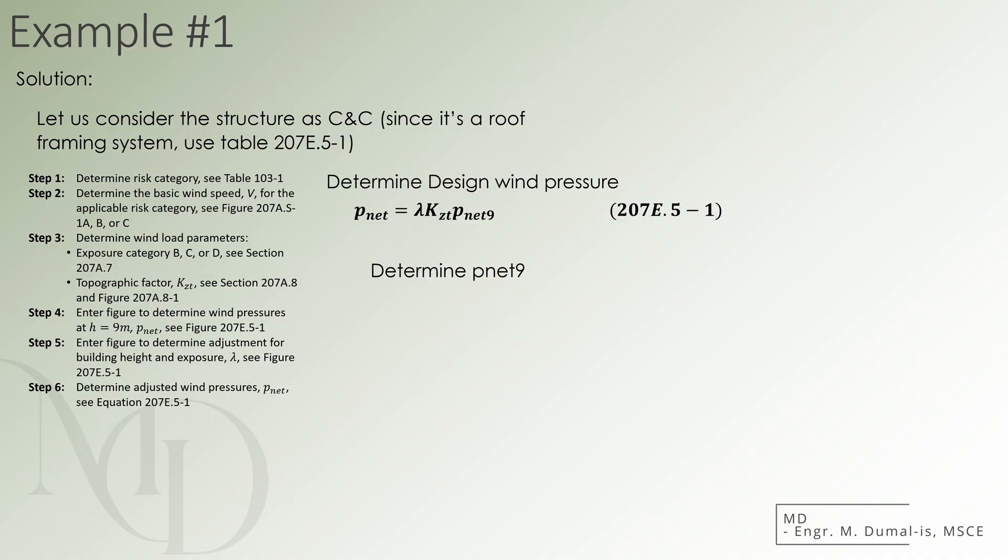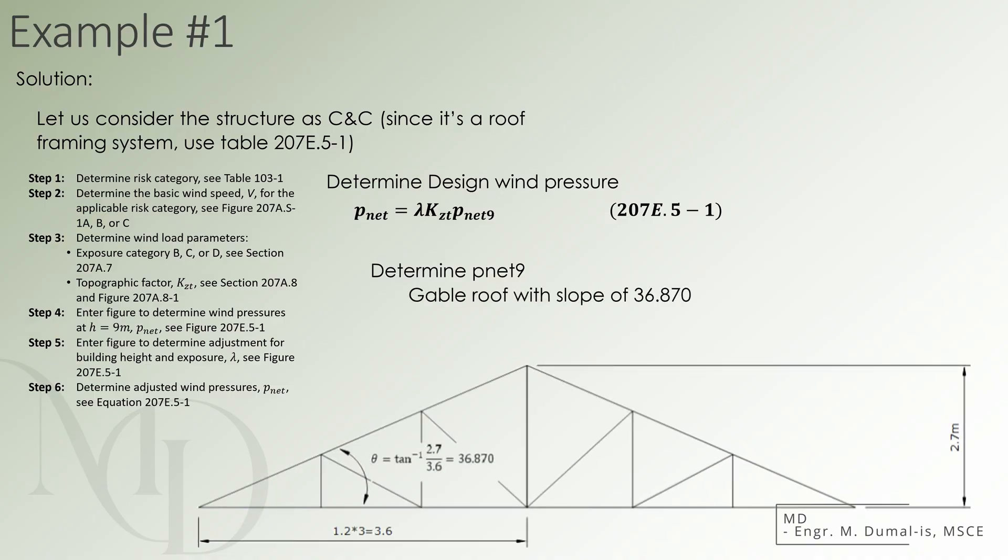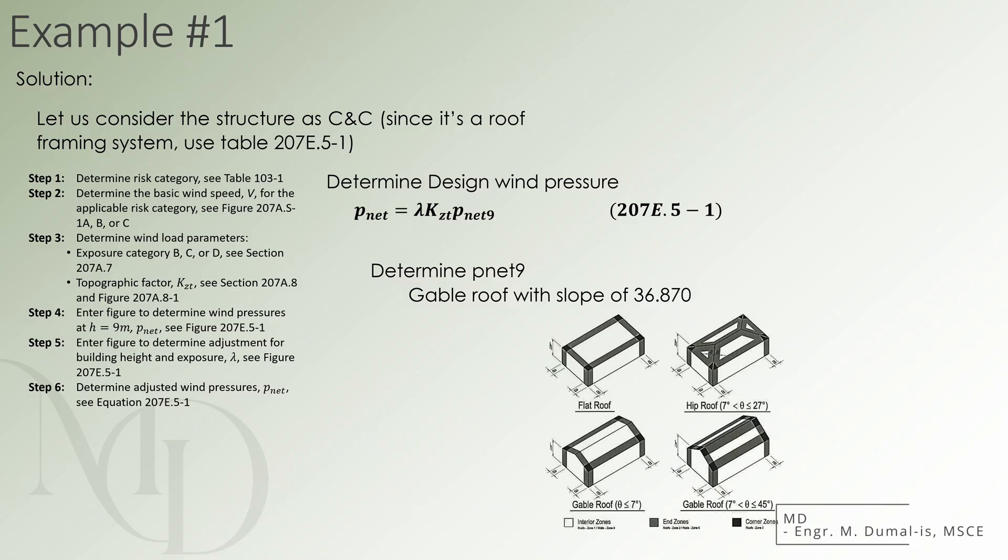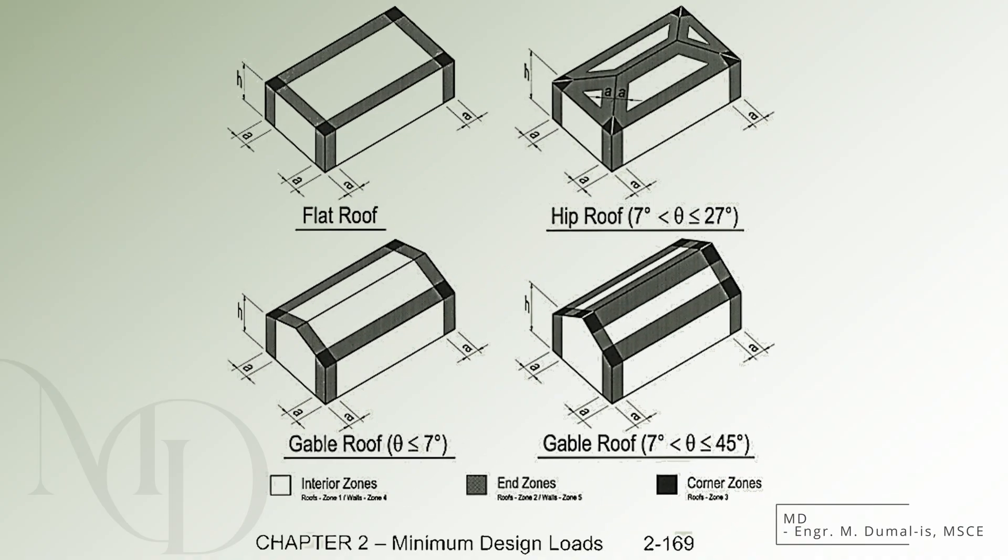Next, we will proceed to solve for the pitch of the roof, since it is another prerequisite needed for the calculation of Pnet 9. We consider half of the truss, which has a height of 2.7 meters, and a base of 3.6 meters. This corresponds to one half of the total roof breadth, which is 7.2 meters. By applying the tangent function, we obtain a roof pitch angle of approximately 36.87 degrees. We then match the roof type and the calculated pitch with the corresponding illustration provided in figure 207E.5-1. There are also other types of roofs shown in this figure. In case the roof type we are analyzing does not match any of the illustrations provided, we will need to select and apply another appropriate method to continue with the analysis.